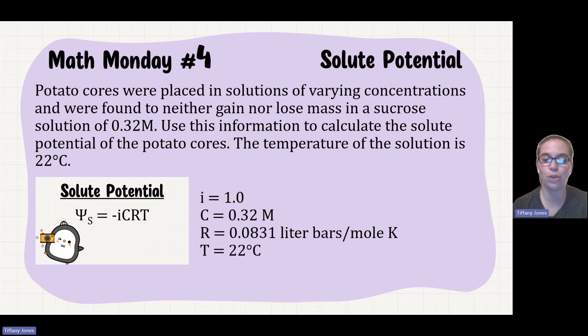We know that we're looking at a sucrose solution, so i is equal to 1 because sucrose is a covalent bond and does not dissociate. Our concentration is 0.32 molar. We know this because it's in an isotonic solution. It doesn't gain nor lose mass, so that tells me that is the concentration of the potato core.